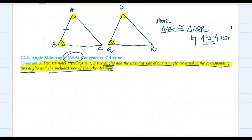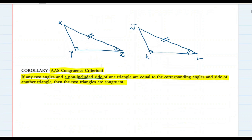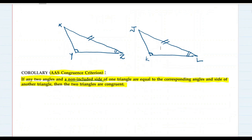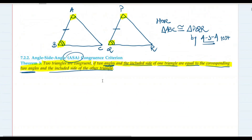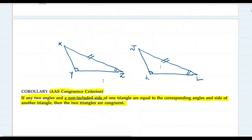Please remember that well. Knowing when to apply AAS and when to apply ASA is very crucial. Always look at the location of the side — whether it is included between two angles or not. One more thing to pay attention to: the angles and the side must be corresponding. Only then the two triangles are said to be congruent.